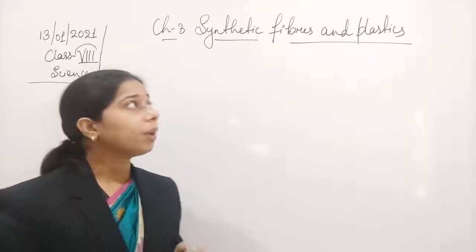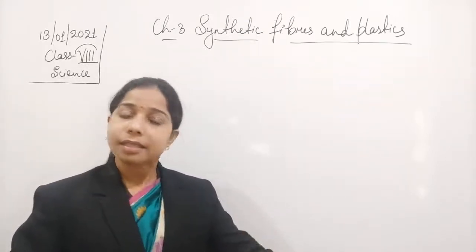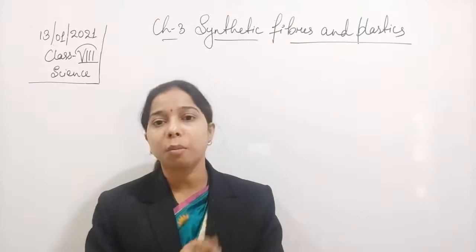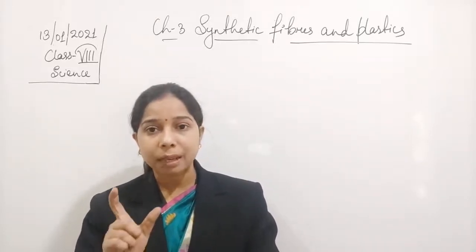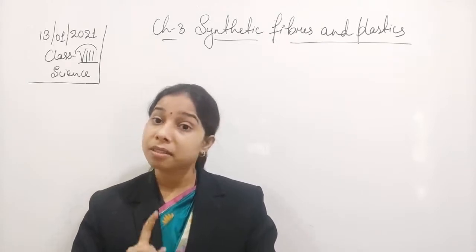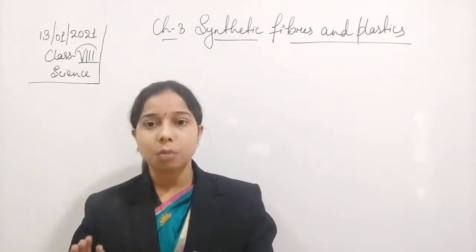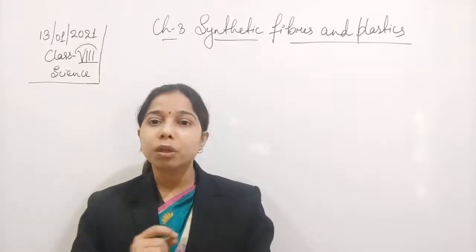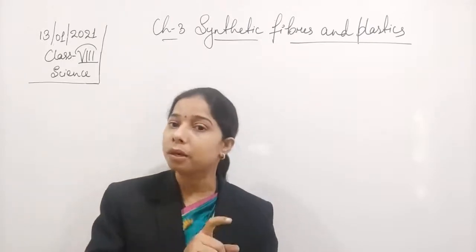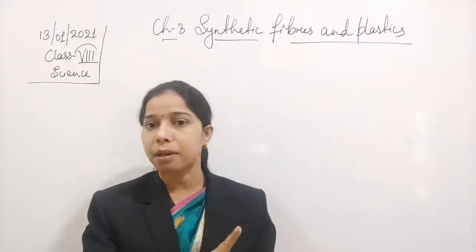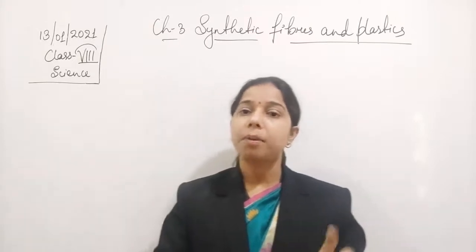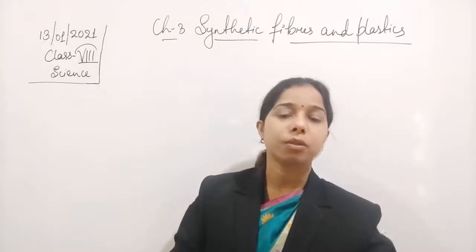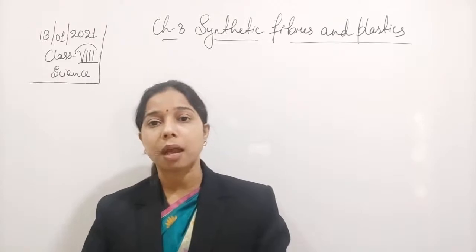We have seen that carbon and hydrogen atoms combine together to form a molecule. Two atoms combine to form a molecule, which is still a small unit. These molecules then combine together to form a polymer. So this molecule is a monomer — formed of carbon and hydrogen atoms — and the monomer combines to form a polymer, which is known as plastic.